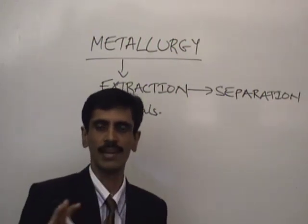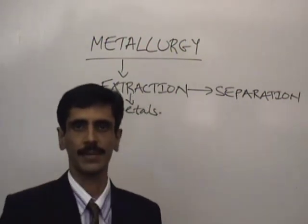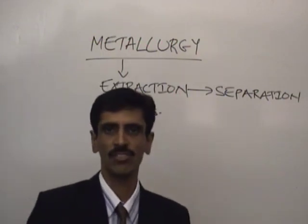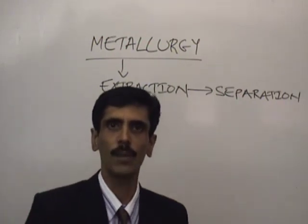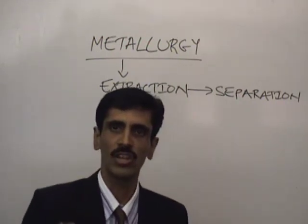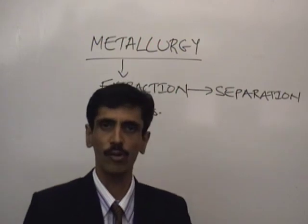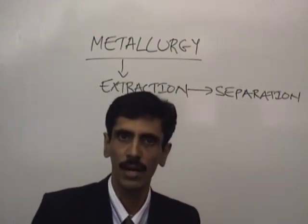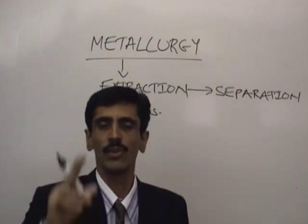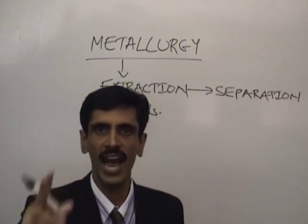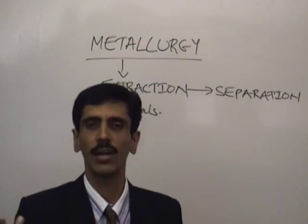Whenever we carry out the extraction process, it has to be only one metal at a time. So sometimes what happens is our prime interest is extraction of one metal, say copper. Now along with copper, there are chances that metals like gold and silver are also present. But because our focus is entirely on extraction of copper, gold and silver are also considered as unwanted material, which we call impurity, or which we call gangue or matrix. And non-metals obviously are also going to be impurities.